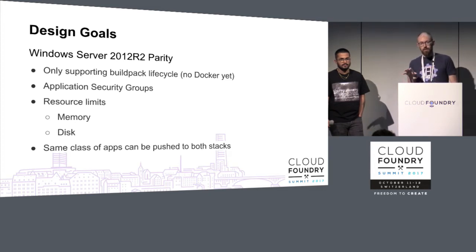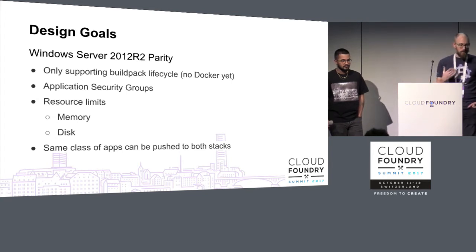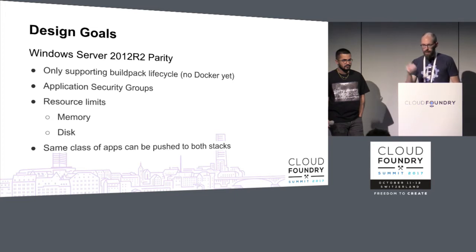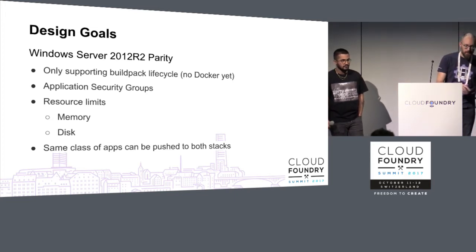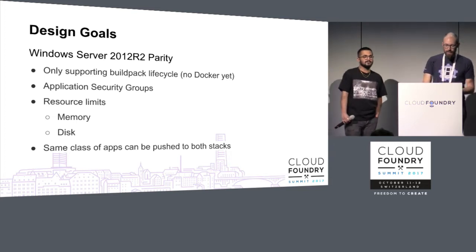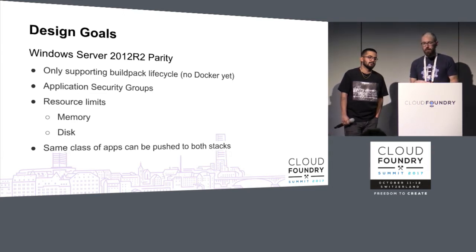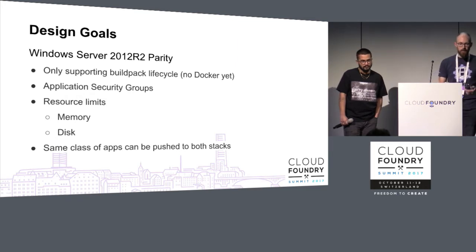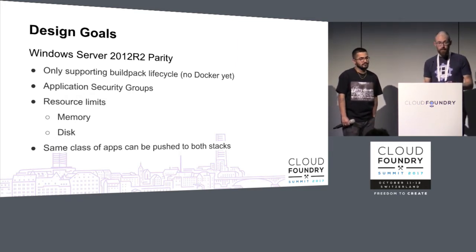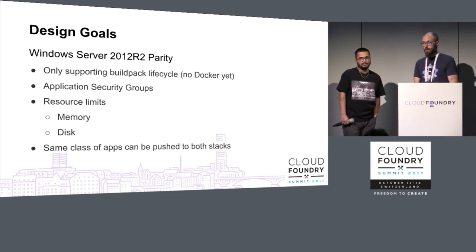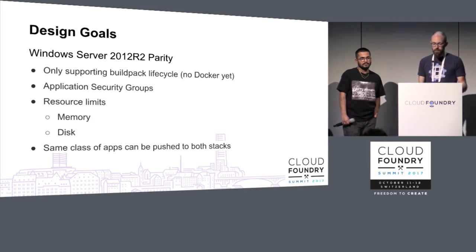We're not initially supporting the nano server image. Microsoft has two root file systems for 2016: nano server and Windows Server Core. Nano server is great — it's more like Alpine Linux, a tiny base image. Tiny to Microsoft is 200 megabytes, versus Windows Server Core which is much larger. But we didn't want to require app developers to rewrite their apps. Most applications targeting the Windows .NET desktop CLR runtime need things that are in the Server Core image, so our initial support will just be Server Core — maybe we'll add nano server support another day.